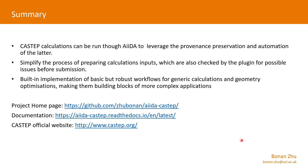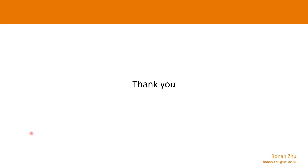To summarize: CASTEP calculations can now be run through AiiDA to leverage provenance preservation and automation. The plugin also simplifies the process of preparing calculation inputs and checks for possible mistakes before submitting. The built-in implementation of some basic but robust workflows can be used for building more complex workflows for specific investigations. If you want to learn more, here is the home page of the project and the documentation on Read the Docs. To get a cost-free academic license, go to the official CASTEP website. Thank you for your attention.